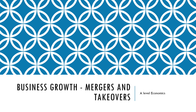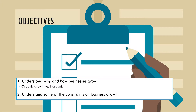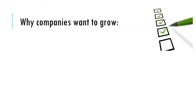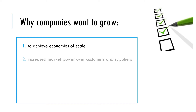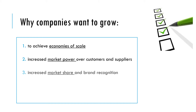Hello and welcome to this video on mergers and takeovers. In this video we're going to look at why businesses grow and how they grow, the two types — organic and inorganic growth — and also look at some of the constraints on business growth. Why might companies want to grow? A number of reasons: to achieve economies of scale, increased market power, increased market share, and increased profitability.